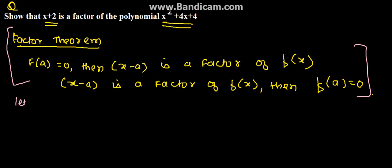Therefore, let f(x) = x²+4x+4. Since x+2 equals x-(-2), we need to check if x+2 is a factor of f(x).